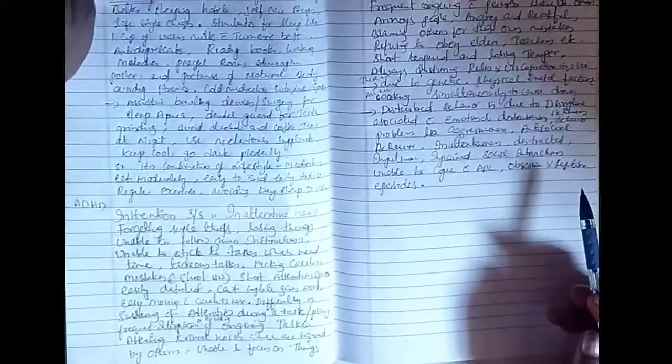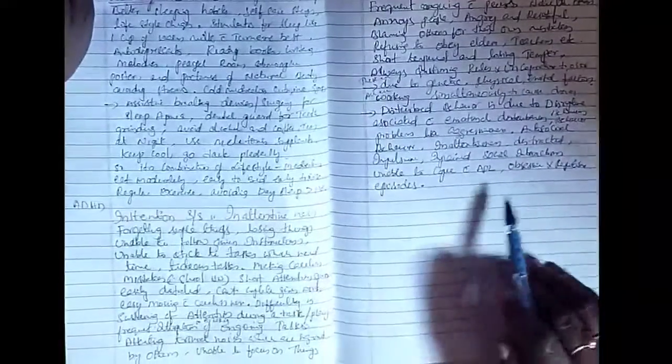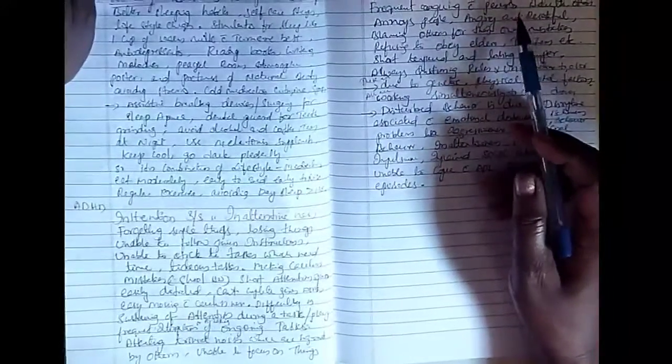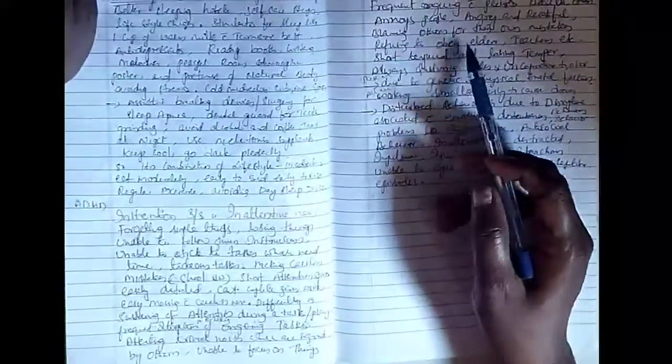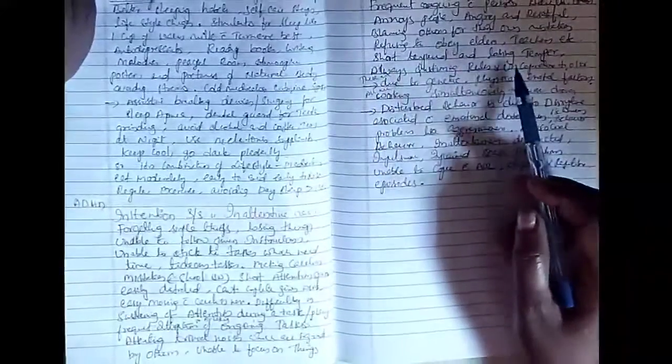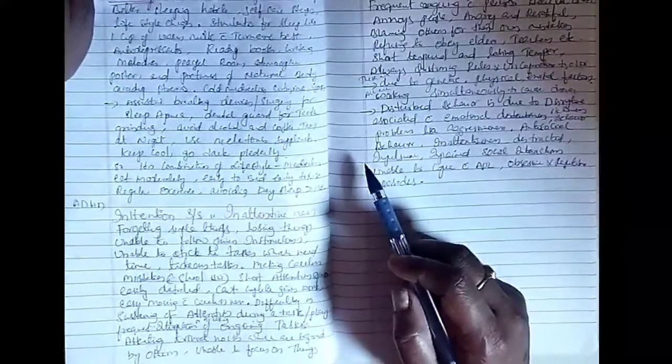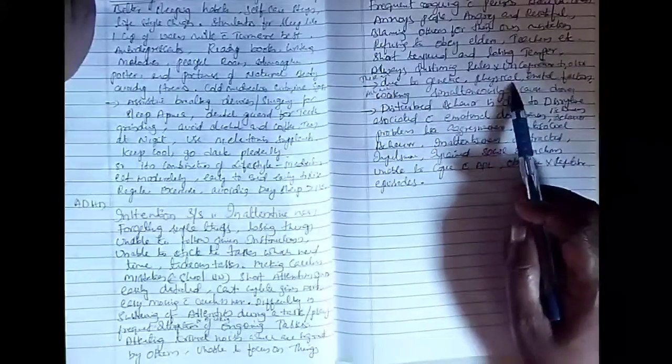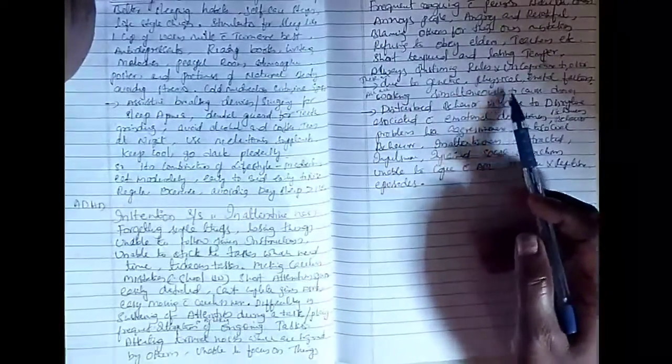The disruptive behavior or disruptive behavioral disorder, DBD, is also part of ADHD. This is nothing but frequent arguing with peers, same age friends, same age groups, adults or others. Annoys people, angry and resentful, blaming others for their own mistakes, refusing to obey elders or teachers. Short temper or losing temper for simple activities, always questioning the rules and uncooperative to others. These are due to genetic, physical, environmental factors and all these are working. They will work together to contribute ADHD.